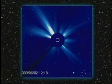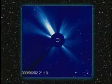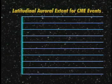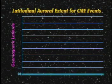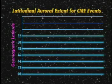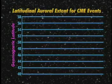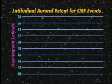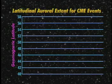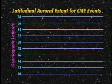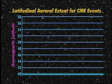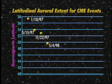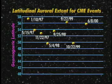It takes around three days for a CME to reach the Earth. The vertical axis of the graph is the geomagnetic north latitude from 40 degrees to 58 degrees. On a globe, 40 degrees north latitude is closer to the equator and 58 degrees north latitude is closer to the geomagnetic north pole.